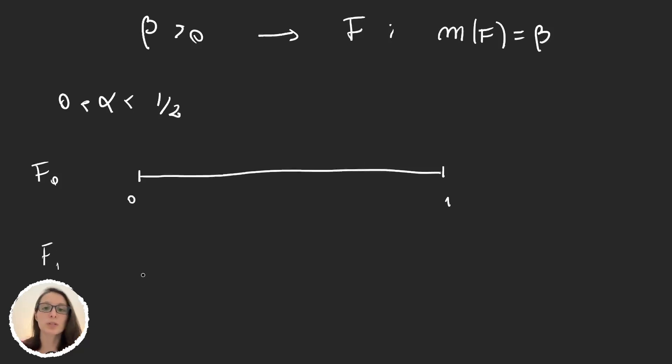What we will do is remove the middle α. That is we will take some interval here that has measure α. And so when we remove this interval then we'll just get this first iteration.